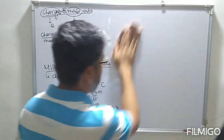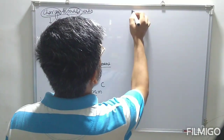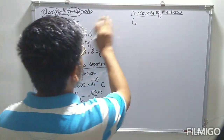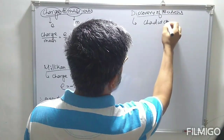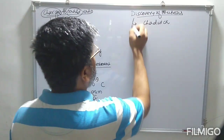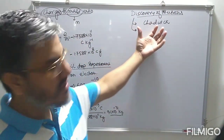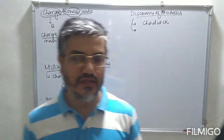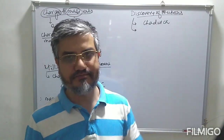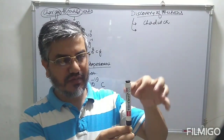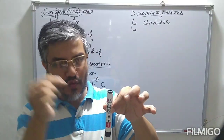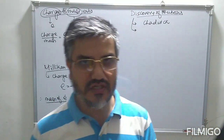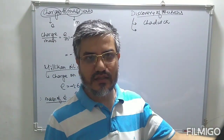Next is the discovery of neutrons by Chadwick. Chadwick was performing experiments using alpha particles. Alpha particles are nothing but helium nuclei (He²⁺). When Chadwick bombarded alpha particles onto beryllium, some uncharged, massive particles were produced. These uncharged massive particles were found to be neutrons, discovered by Chadwick.